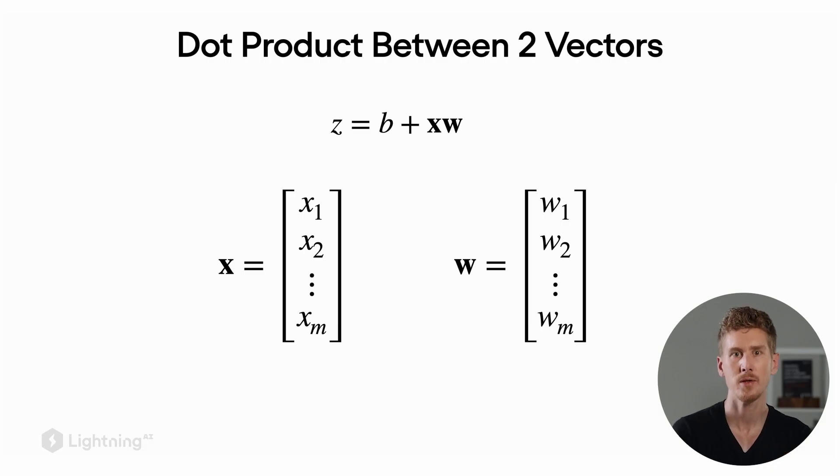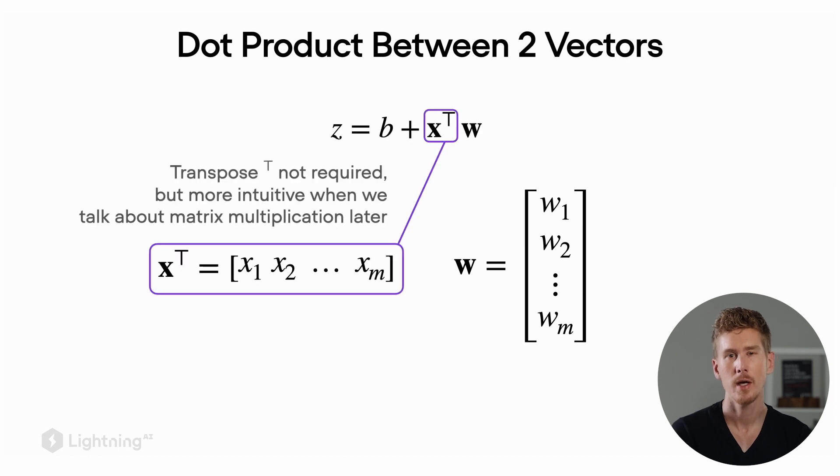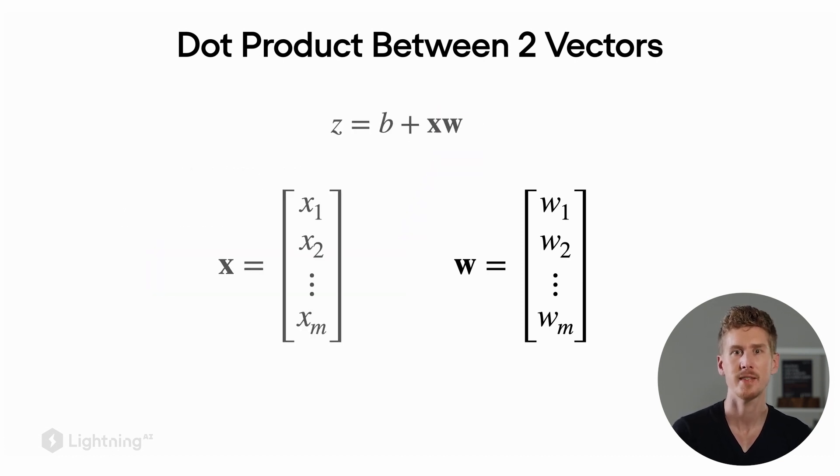Let's walk through this step by step. Again imagine x is a vector from x1 to m and w is a vector from w1 to wm. Now I'm adding a transpose operation here which is not required but it is somewhat useful to introduce it here because it will become more handy when we talk about matrix multiplication later. So what this transpose here does is it's transposing this column vector x into a row vector x transpose. But maybe if it's simpler, let's just think of x and w both as column vectors.